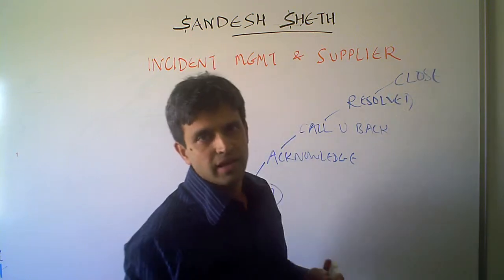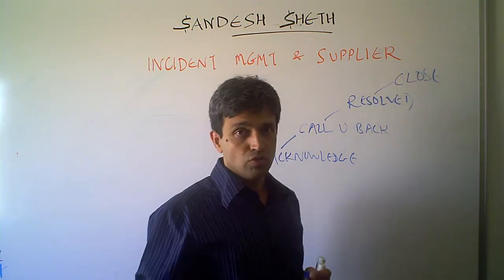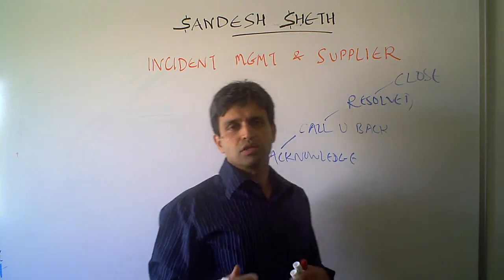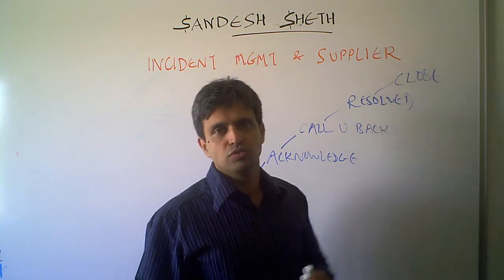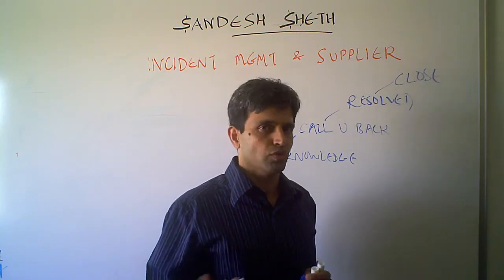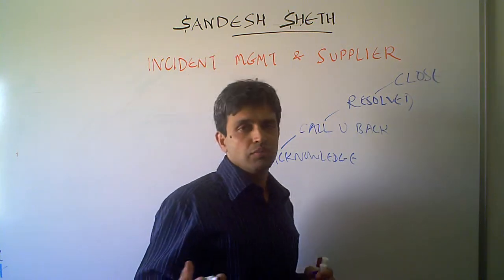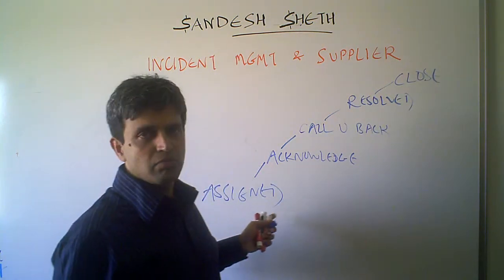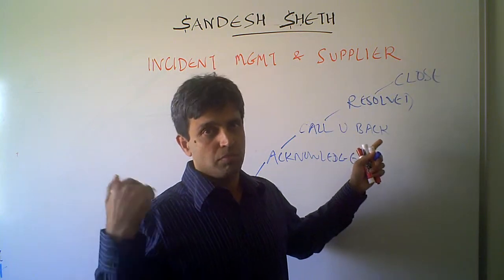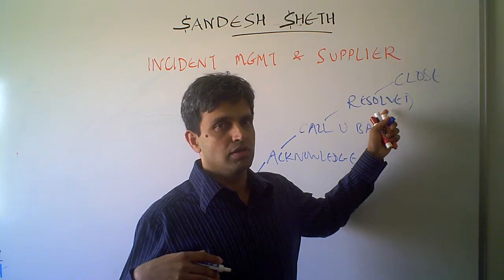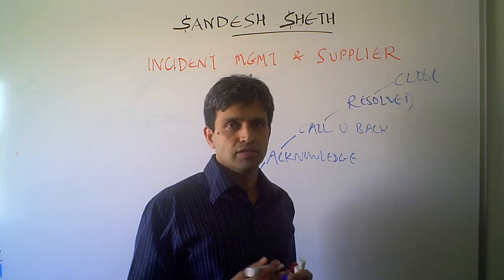If the user does not close the incident after 72 hours following the resolved status, the incident would get closed on its own. So when it comes to a supplier, this is typically a chain: assignment, acknowledgement, calling back from the supplier, and then the resolved and closed status.